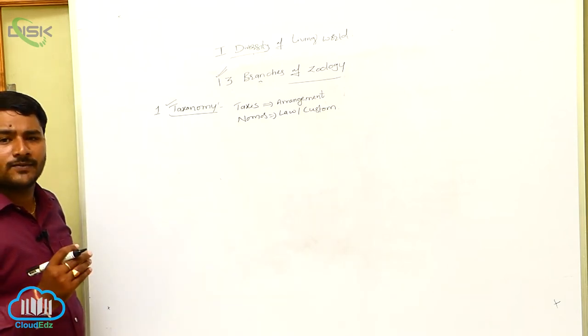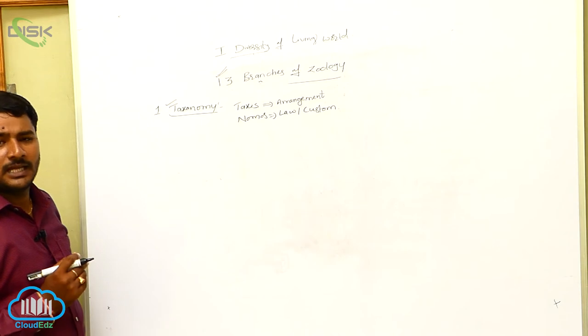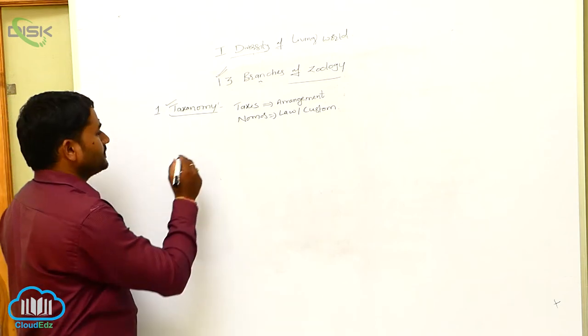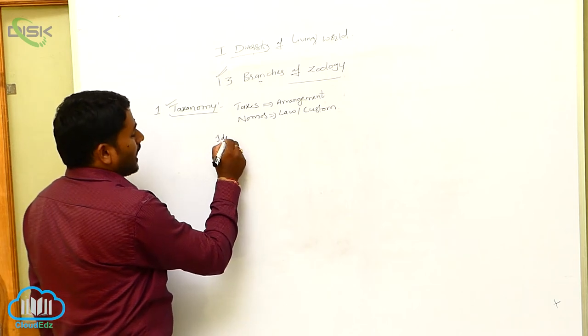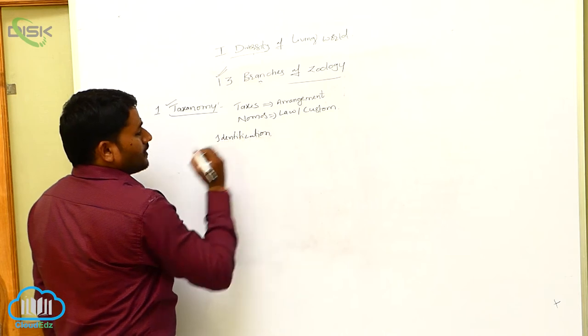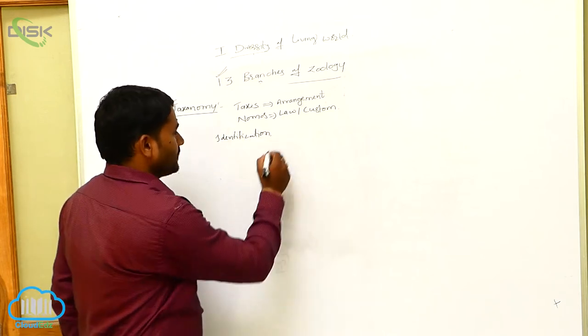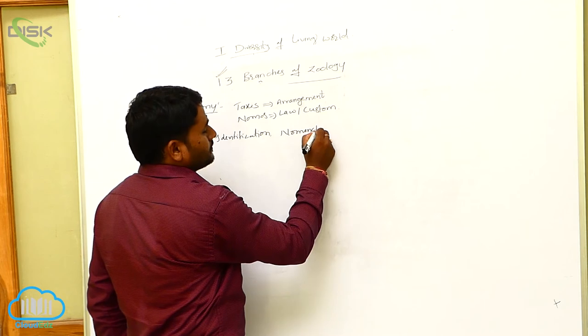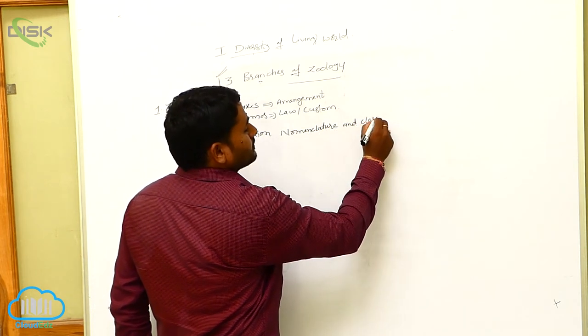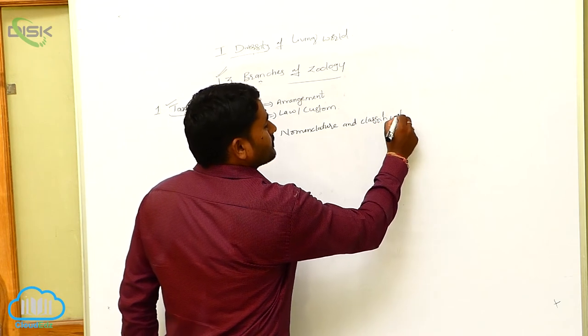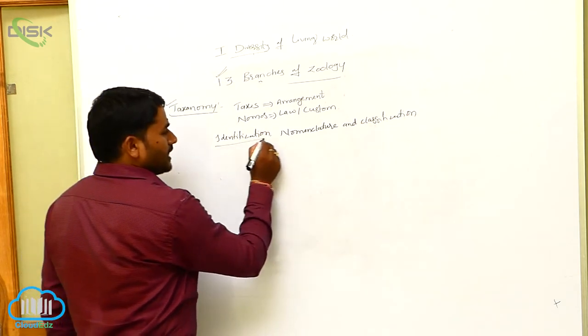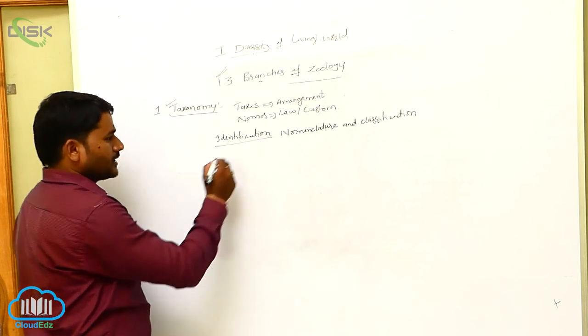Taxonomy is a branch of zoology that deals with the scientific processes like identification, nomenclature, and classification. So taxonomy deals with the identification of the animal.